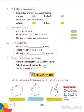Why do we need to grow plants? We need soil, water, and sunlight. State some uses of plants: we get many things from plants. Plants give us fruits and vegetables. They give us cereals and pulses. They also give us fresh air to breathe.